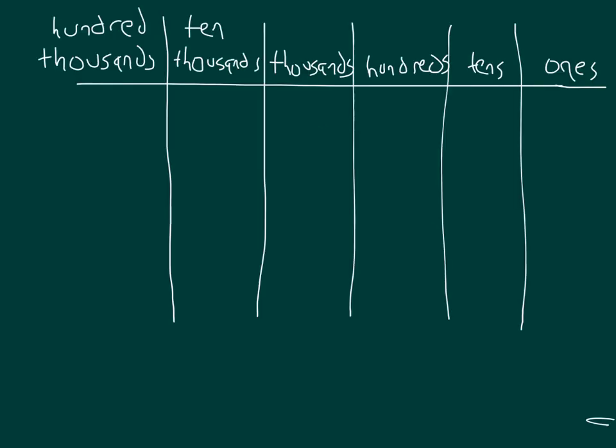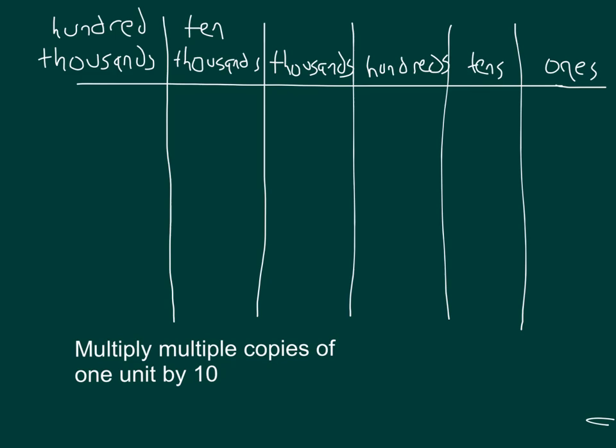Here we have a place value chart with ones, tens, hundreds, thousands, ten thousands, and hundred thousands. Let's think about what happens when we multiply multiple copies of one unit by 10.